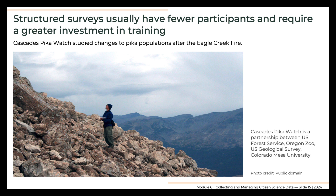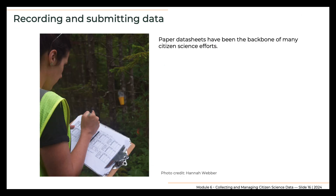Typically, projects that employ structured surveys include fewer participants than projects that employ unstructured surveys, but the detailed protocols and trained or otherwise knowledgeable participants allow for sophisticated data analysis and detailed conclusions. Also note that most projects that measure water or air quality generally must be set up as structured projects to allow for trends to be seen over time. However, even unstructured measurements can sometimes be helpful, such as documentation of algal blooms. If determining how to design a project sounds daunting, know that collecting and managing data can be facilitated by building the project on an existing citizen science platform, as described in Module 7.